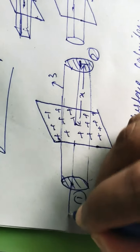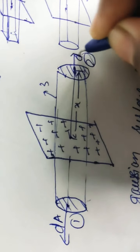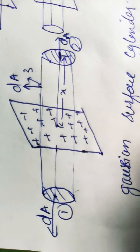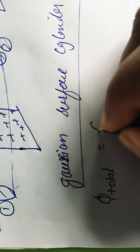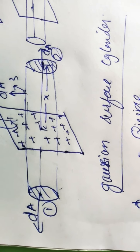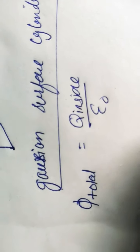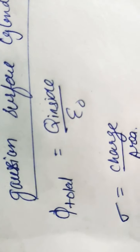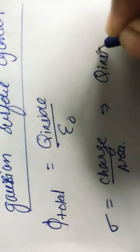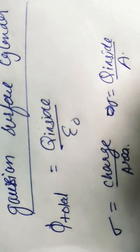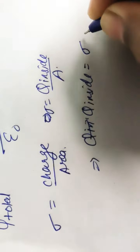We assume the cylinder as a Gaussian surface. This will be our first surface, this is our second surface, and this one is our third surface. Area vector dA for the first surface will be like this, for the second surface dA will be like this, and for the third surface it will be like this. According to Gauss's Law, total flux equals Q inside divided by epsilon. The charge is uniformly distributed along the whole sheet, so from surface charge density sigma equals charge per unit area, Q inside will be sigma times A.